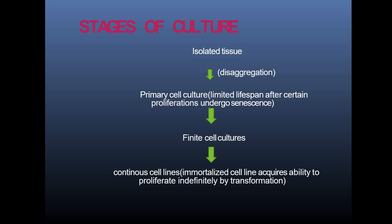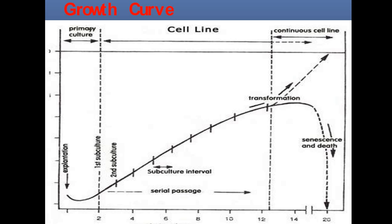For culturing, you need certain media, a suitable environment, and other factors. Under these conditions, cells grow, resulting in finite cell cultures — meaning they replicate for a certain number of cycles, say 100, and then stop, going into senescence or death. However, if continuous proliferation occurs due to mutations or introduction of the telomerase gene, it results in the formation of a continuous cell line.